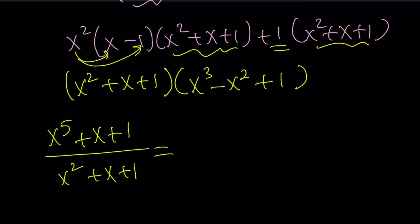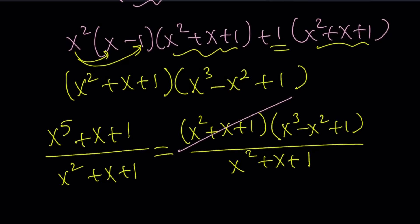It was x to the fifth plus x plus one divided by x squared plus x plus one. But now, I was able to factor the numerator, which is x to the fifth plus x plus one. So, I can now replace the numerator with this, x squared plus x plus one, multiply by x cubed minus x squared plus one. And the bottom just stays the same. And guess what? We have x squared plus x plus one cancel out, and we end up with the answer. So, basically, this is kind of like a divisibility problem.